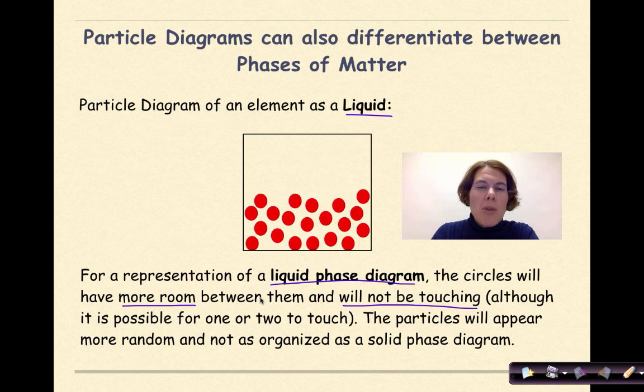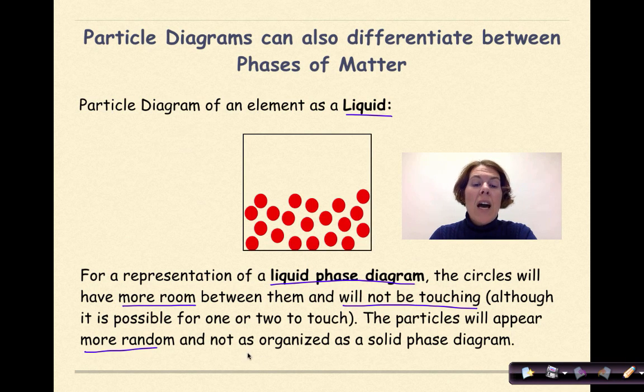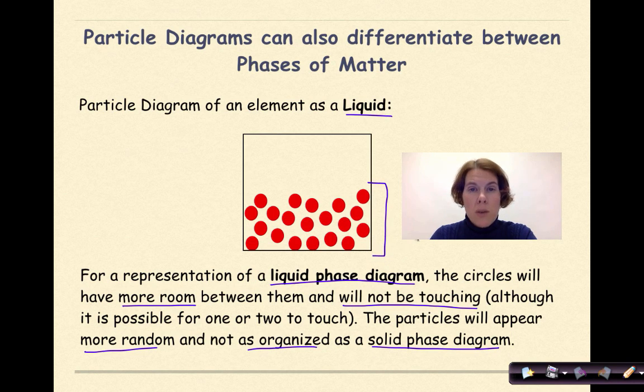Although, of course, it is possible for a couple to touch, but for the most part they won't be touching. The particles will appear to be more random and not as organized as in the solid phase diagram. So this is how we would represent a liquid using particle diagrams.